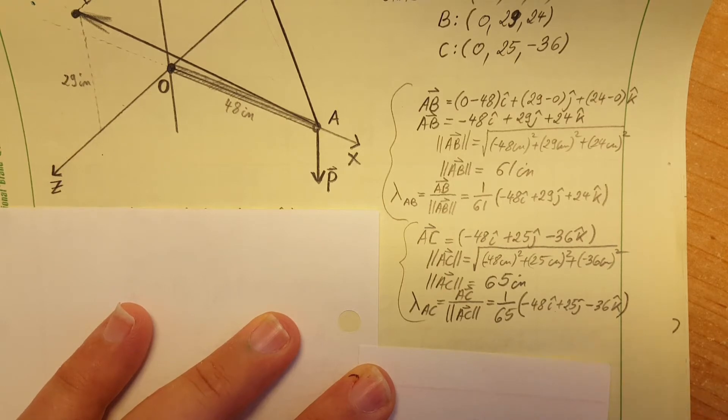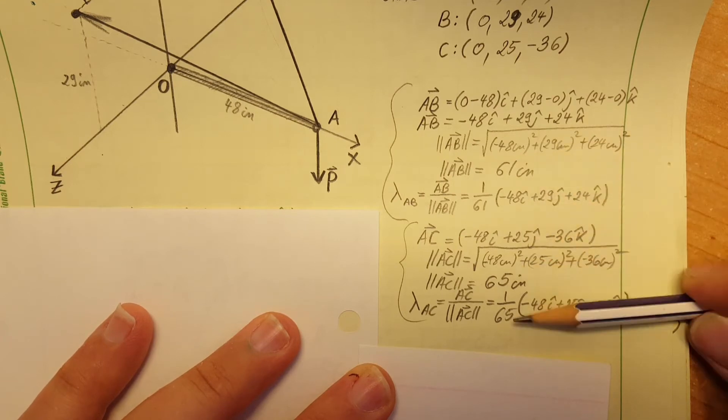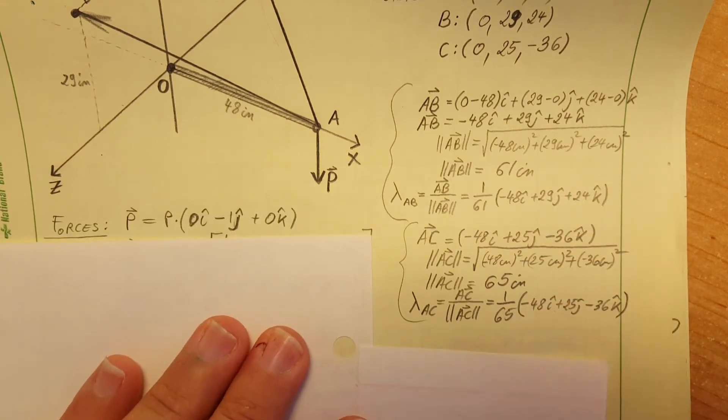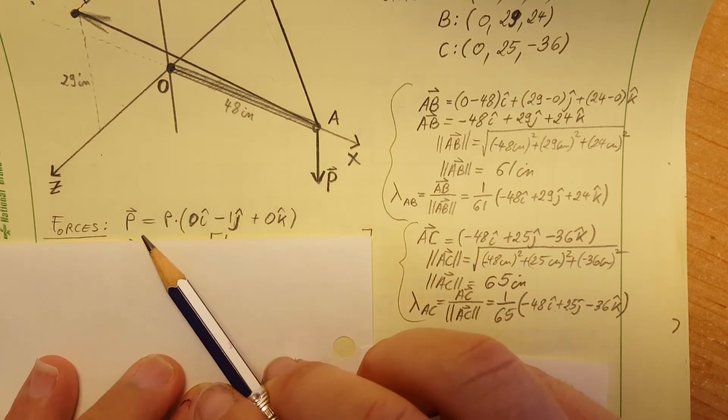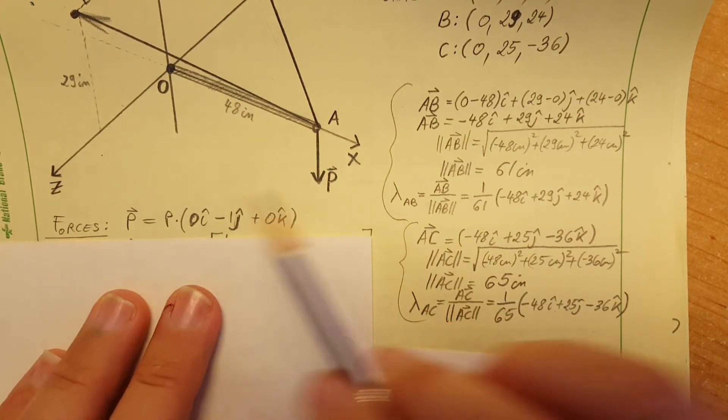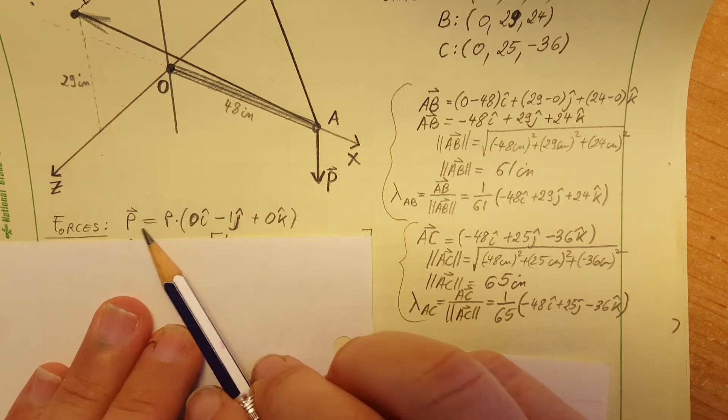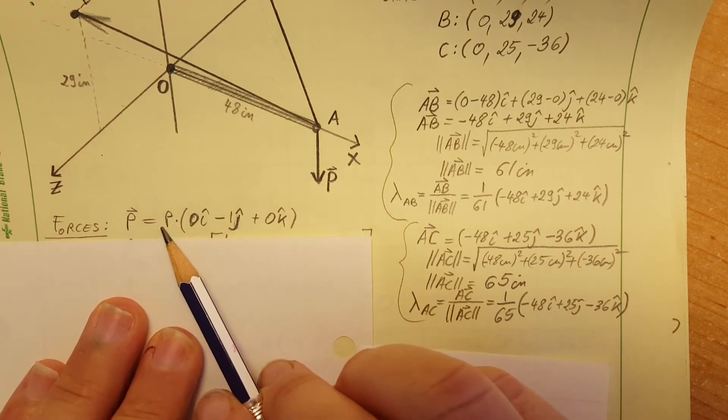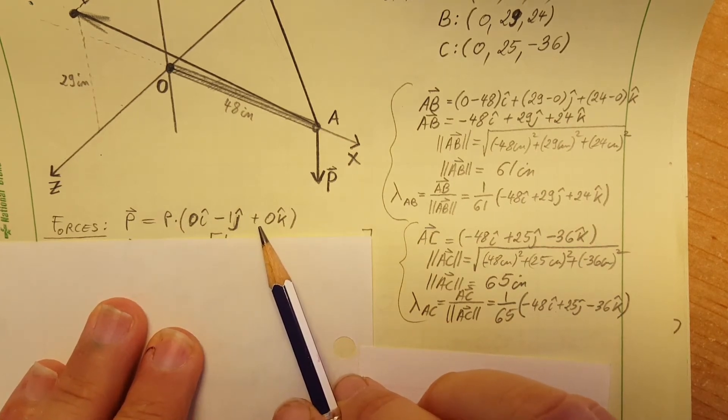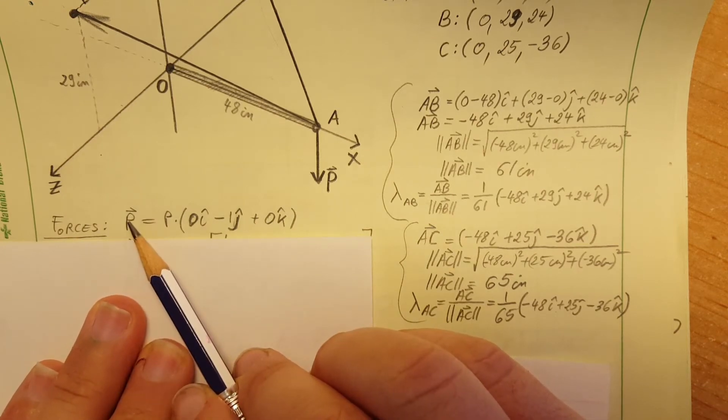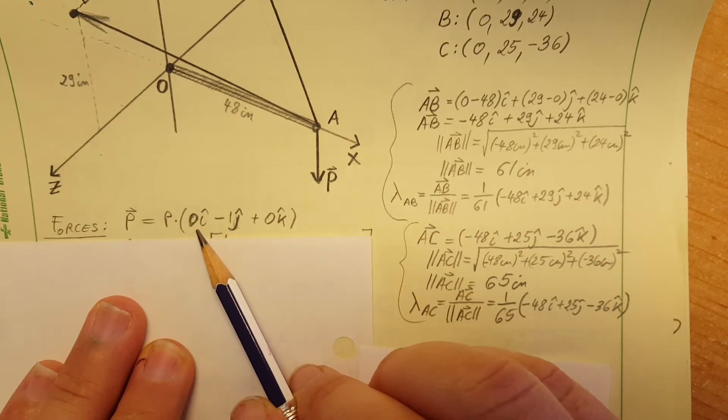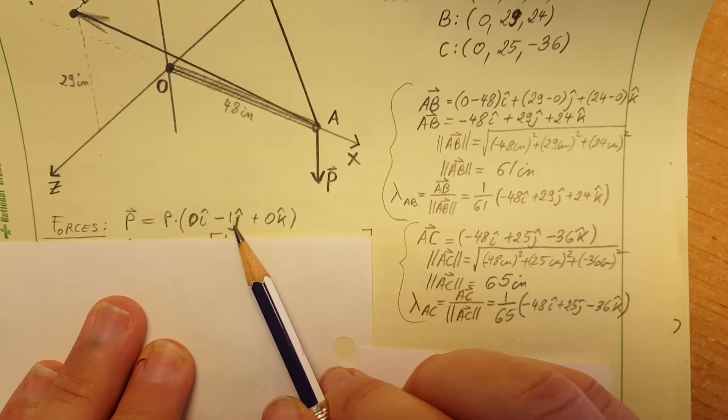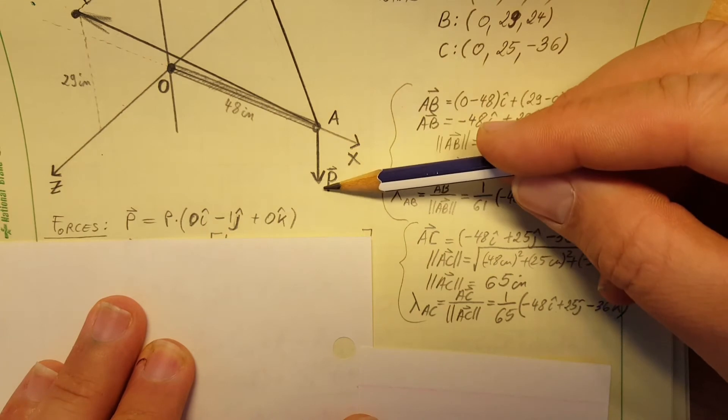Now we have the unit vectors for these two, so let's take a look at P. What do we know about P? We know it's going straight down, so we can write its position unit vector. The force, the magnitude times the unit vector, so the force P equals the magnitude of P times 0 i, negative 1 j since it's pointing straight down.